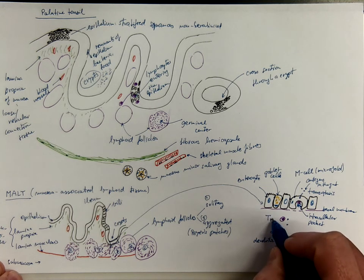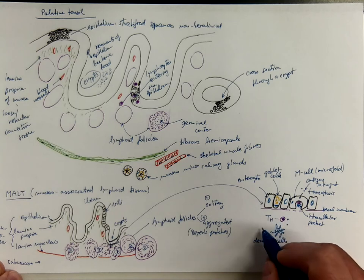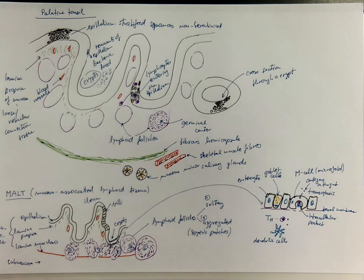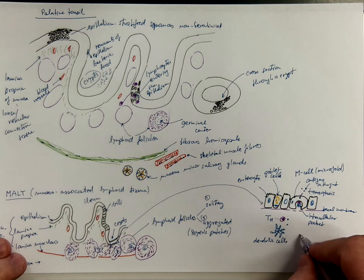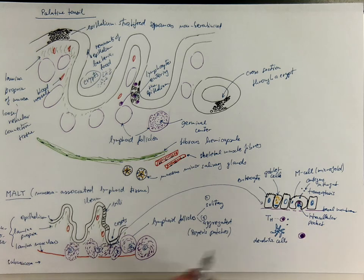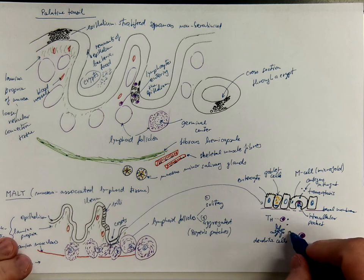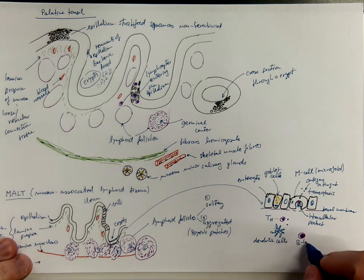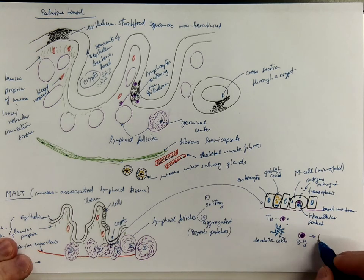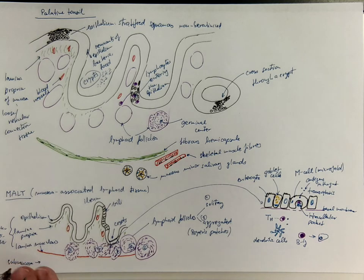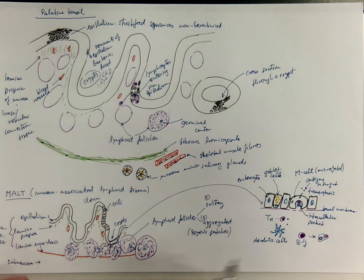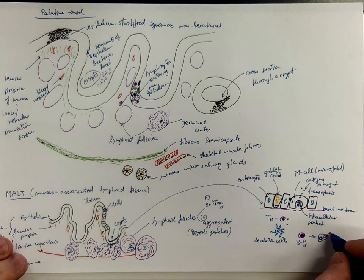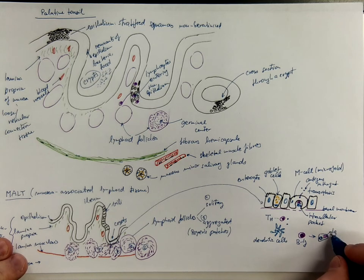And once they will be activated, so these are dendritic cells, this will be T-helper lymphocytes, they can stimulate the B lymphocytes to become plasma cells with the rough endoplasmic reticulum that produces the immunoglobulins.